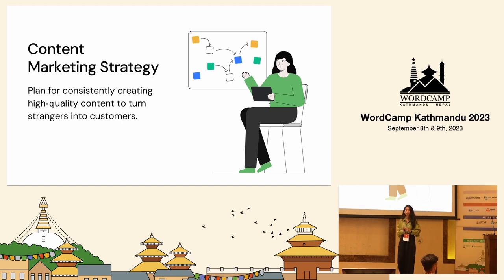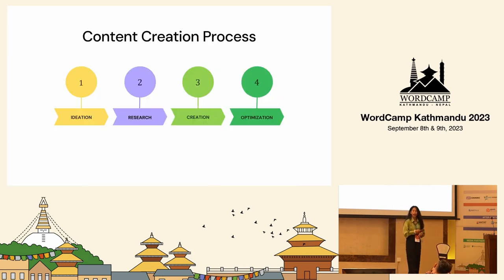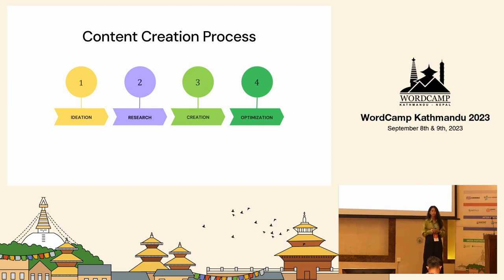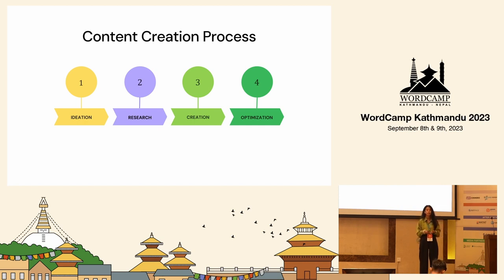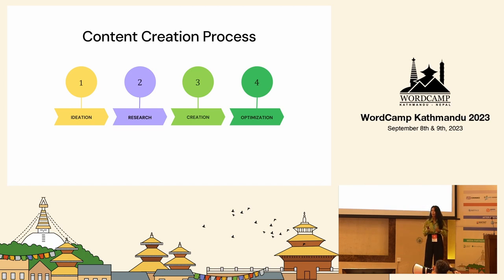When I started out as a content planner, my planning process was quite simple. I followed a four-step process: ideation, research, creation and optimization. The first step was to brainstorm content ideas — thinking about topics my audience would be interested in, then coming up with a list of potential ideas. Next was in-depth research to gather relevant information. Once I had all the information I needed, I would assign the content to my team of writers, and finally ensure the content was high quality and optimized for search engines.